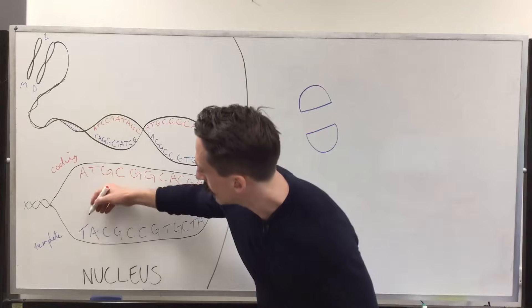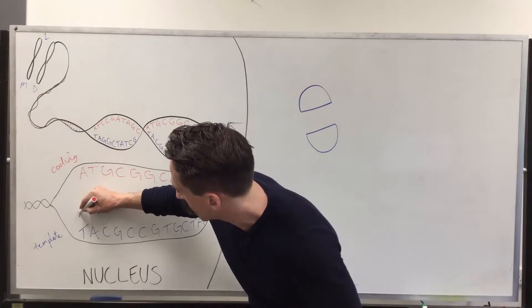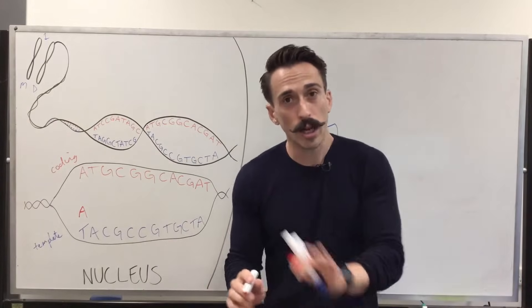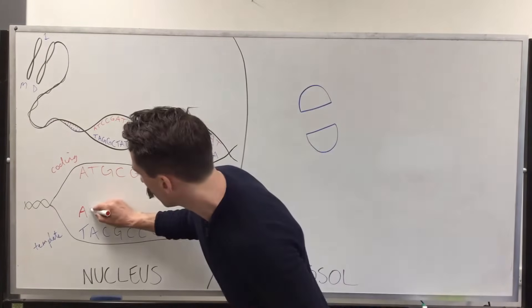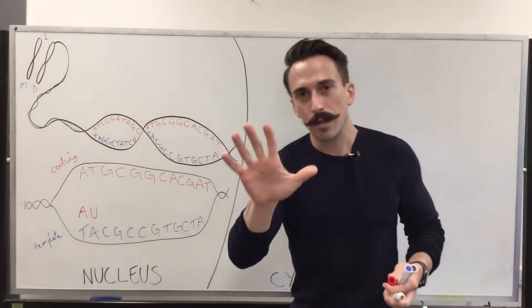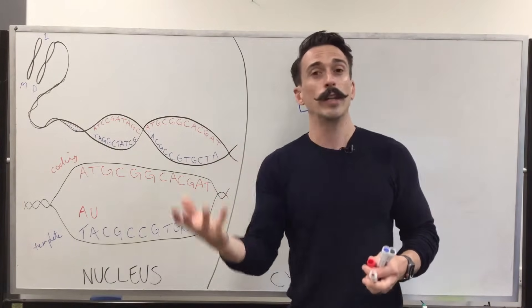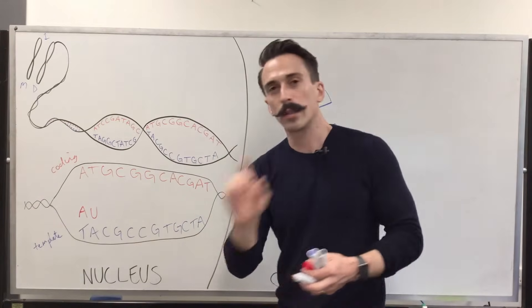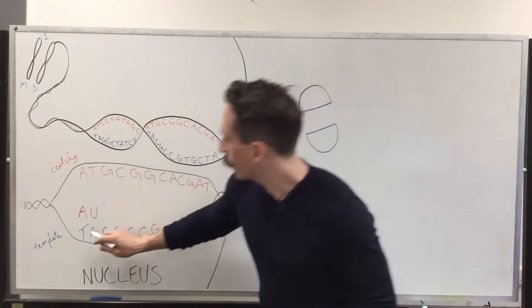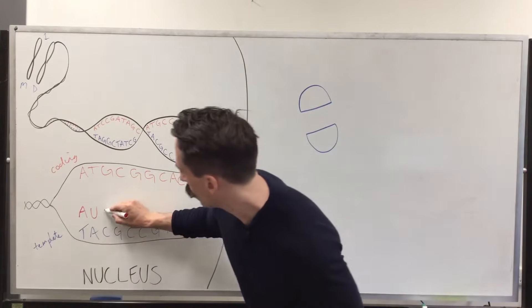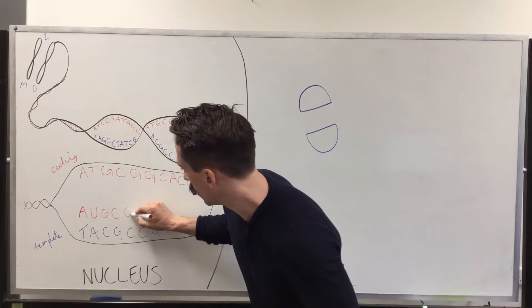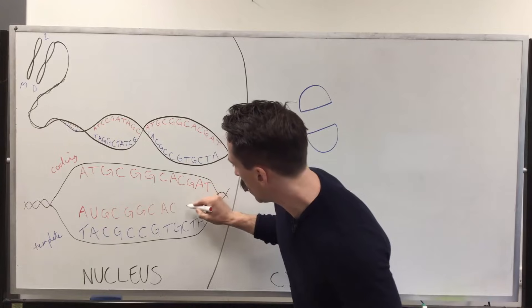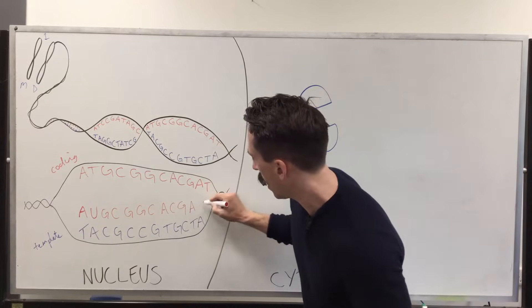It'll come along and it will read the template strand and it will produce basically the opposing nucleotide that's on the coding strand with one change. This is the change. Any time it sees a T, well, you know what's going to happen. It's going to put an A. Any time it sees an A, you think it puts a T, but this is the change. It puts a U for uracil. This is the fifth letter of our DNA, or I should say of our genetic booklet. A, T, G, C and U. U is specifically for RNA. So, we've got A, U, G, C, G, G, C, A, C, G, A and U.